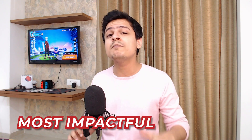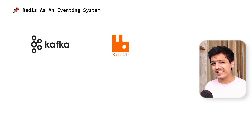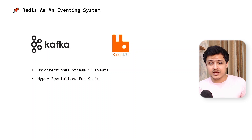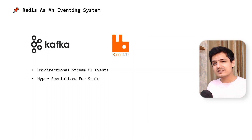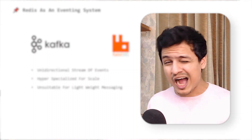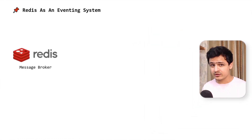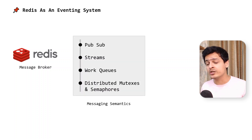Adding communication features to Redis was definitely one of the most impactful decisions the Redis team has ever taken. Unlike Kafka or RabbitMQ, Redis doesn't try to dictate how messaging should work. Kafka, for example, forces us to think of messaging as a unidirectional stream of events. Its architecture is hyper-specialized for scale. Unfortunately, this makes Kafka unsuitable for lightweight messaging patterns to power RPC-like use cases. And managing even the tiniest Kafka cluster is complicated and expensive. Redis, on the other hand, is a multi-paradigm messaging broker. It provides multiple messaging semantics you can use based on your use case.